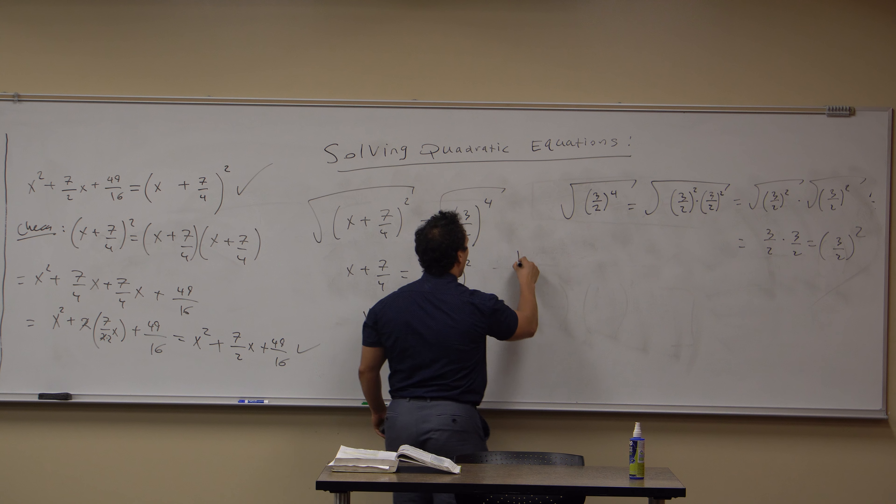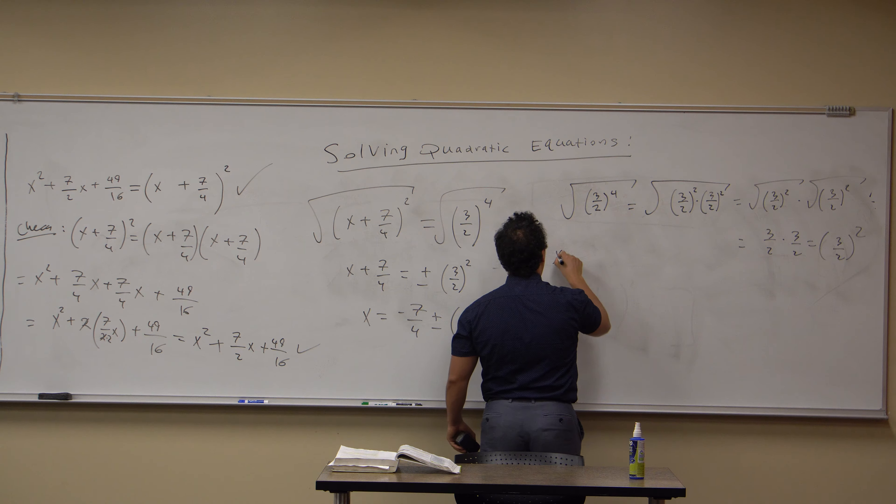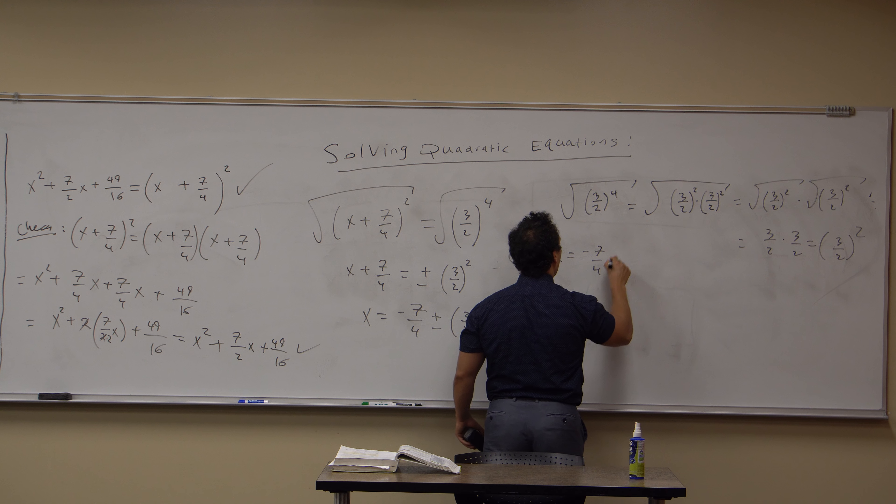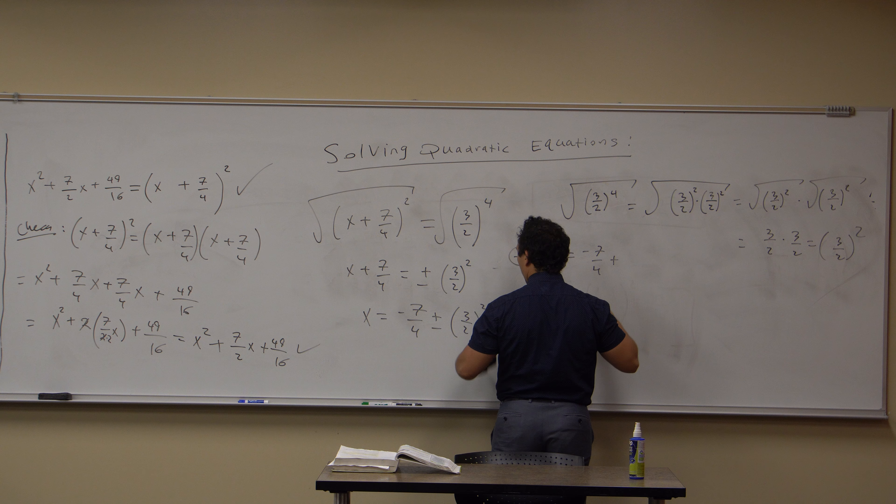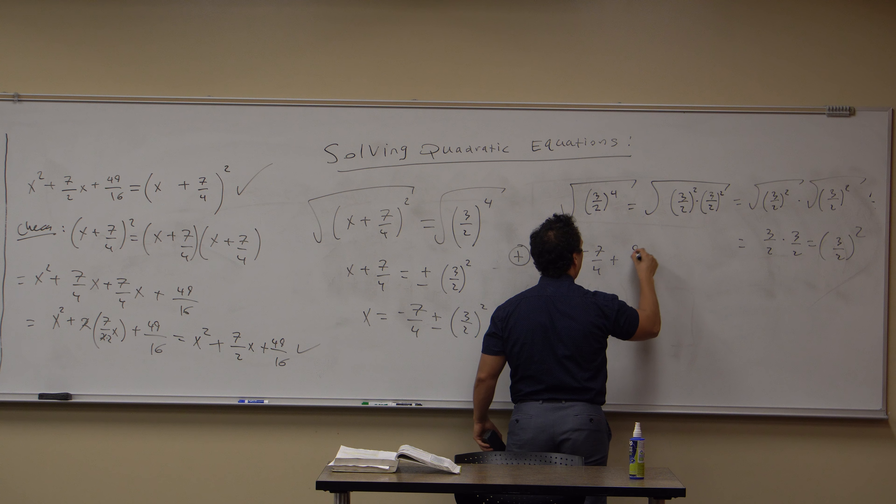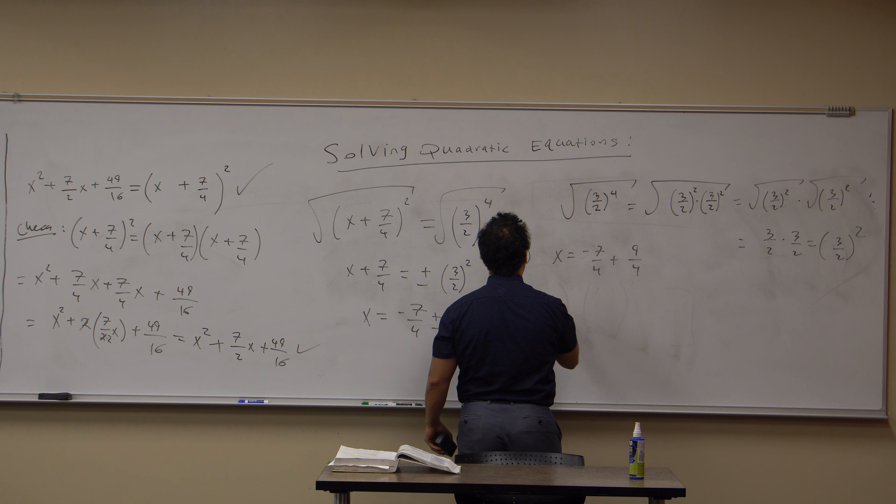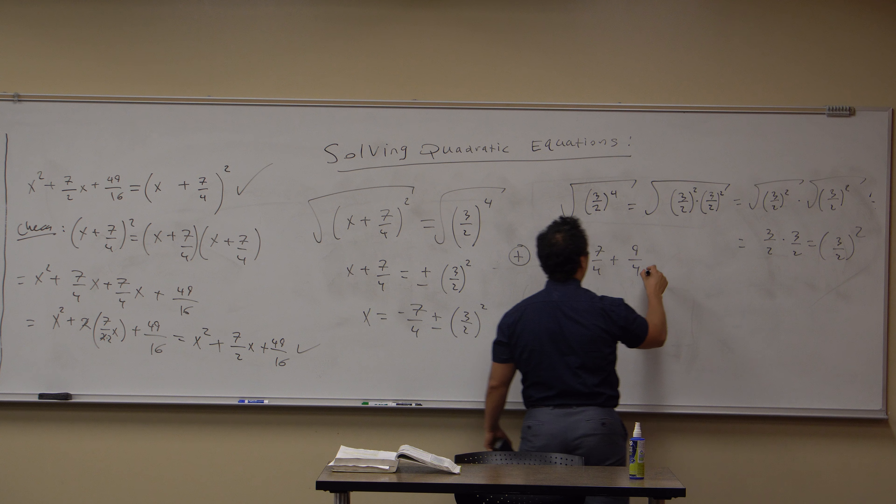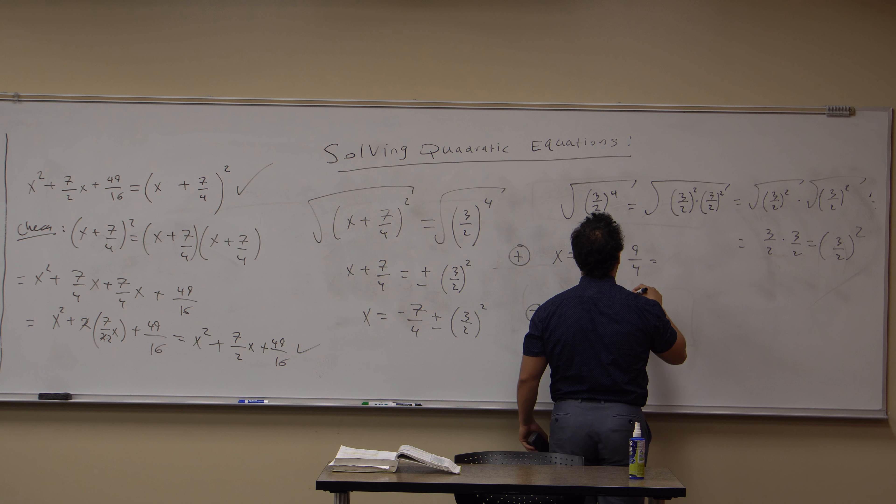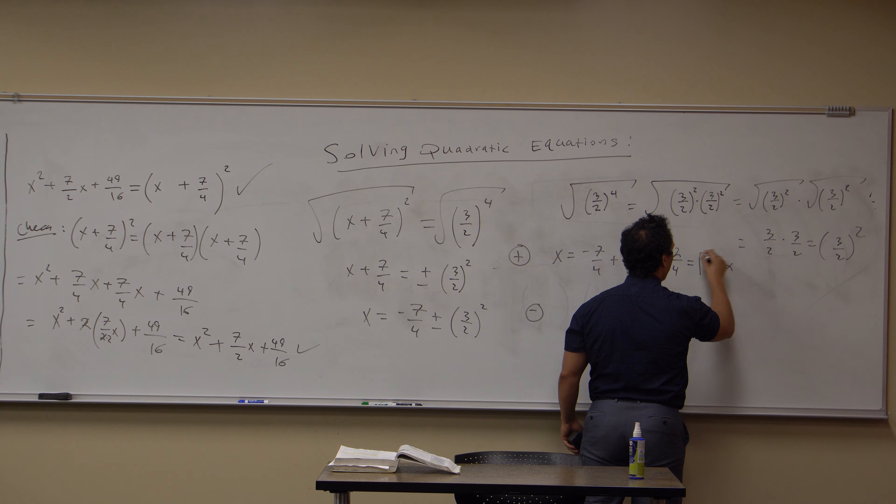So when we elect to add, x = -7/4 + 9/4. And we can keep going, that's 2/4. And so that's 1/2. This is one of the answers, 1/2 is one of the roots.